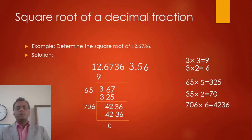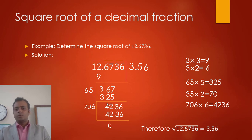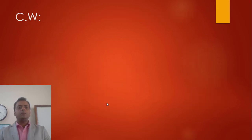So the solution is 3.56 as the square root of 12.6736. Therefore, √12.6736 = 3.56. Now your classwork is to determine the square root of 5.0176.